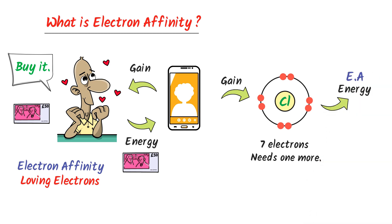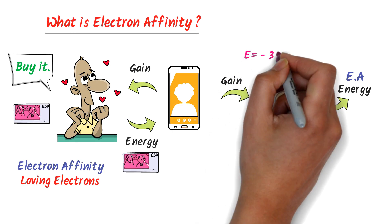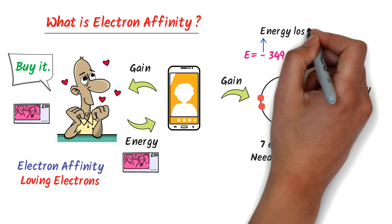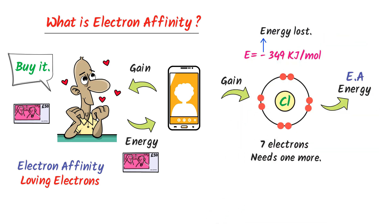For example, chlorine will lose -349 kilojoules per mole of energy after gaining this electron. Remember that this negative sign indicates that energy is lost to the surrounding, or we can say that electron affinity is an exothermic reaction in which heat energy is released to the surrounding.